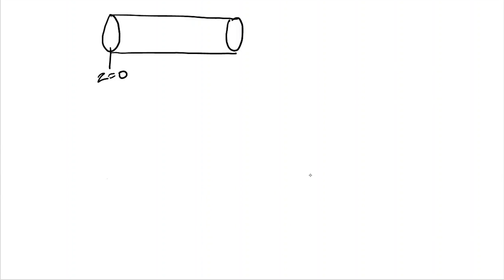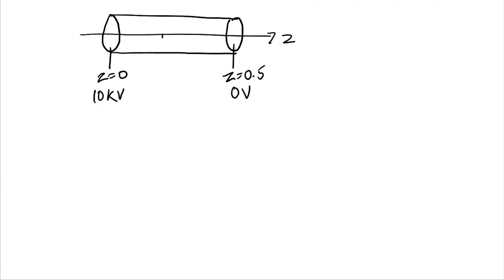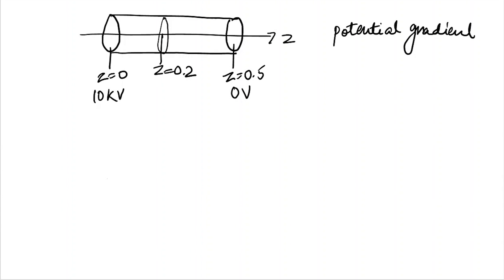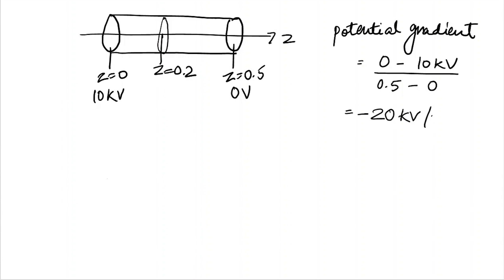Let's redraw the setup. At Z equal to 0 the voltage is 10 kilovolts, and at Z equal to 0.5 the voltage is zero volts. We need to find the electric field at Z equal to 0.2. We will divide the cylindrical medium into two parts because it is uniformly charged, so we can find the potential gradient across it. The potential gradient equals 0 minus 10 kilovolts divided by 0.5 minus 0.